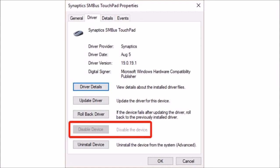The third one is error handling errors. All software problems that occur during interaction with the user should be handled successfully. Besides, a user should be clearly informed about the cause of the problem and possible ways out. If a user types something incorrectly, that particular user should receive a quite informative message so as not to make the same mistake again.